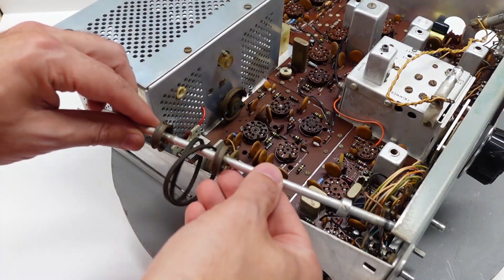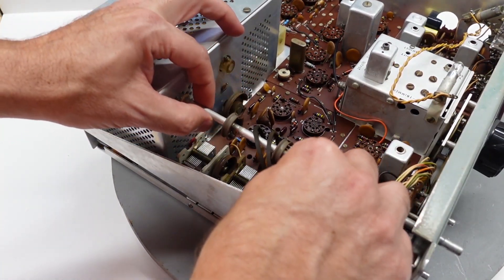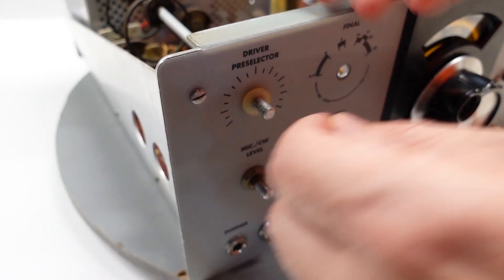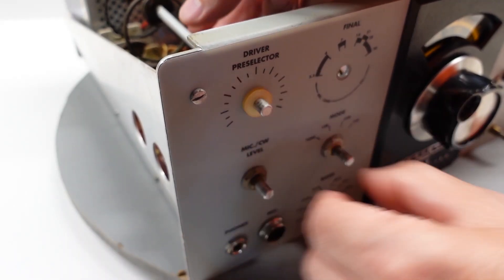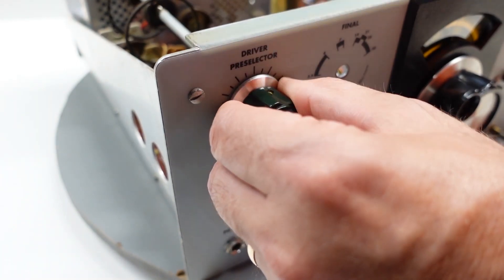After that, I can reattach the front panel and all of the switches and knobs, and rebuild the belt drives for the plate and grid controls. The double capacitor mechanism for the driver pre-selector required a bit of finesse to put back together, but following the assembly manual instructions was a big help.